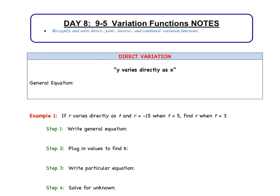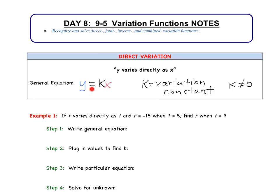The first variation function we're going to look at is direct variation. The key phrase we will see for a direct variation is something along the lines of 'Y varies directly as X.' When we see that phrase, we are going to use the equation Y equals K times X. This K value is called the variation constant, and K cannot equal 0.